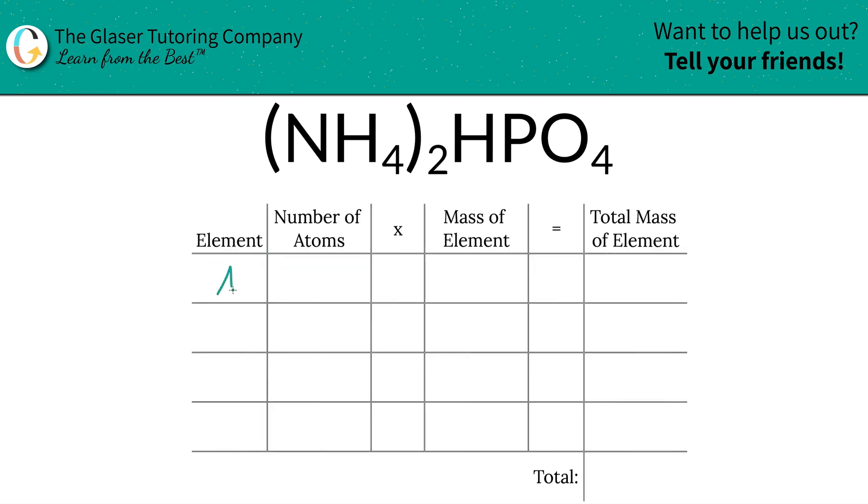The first thing I'm going to do is write down the individual elements I see in the compound. So we've got nitrogen, we get hydrogen, we get phosphorus, and we get oxygen. Then we're going to write the number of atoms of each, and that's where the subscripts come into play.